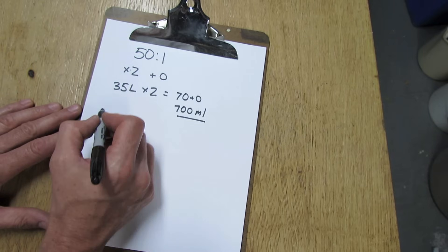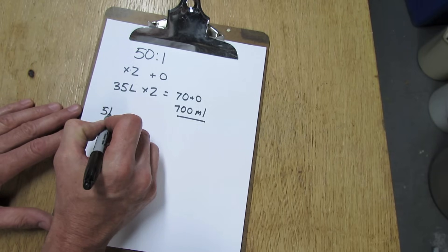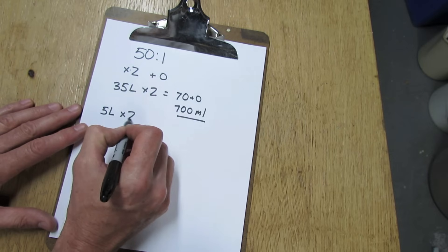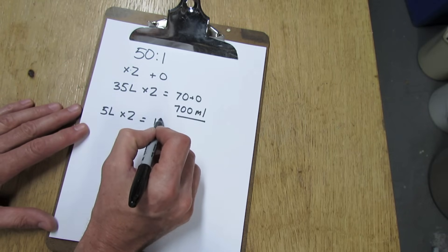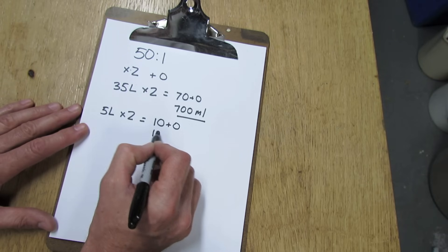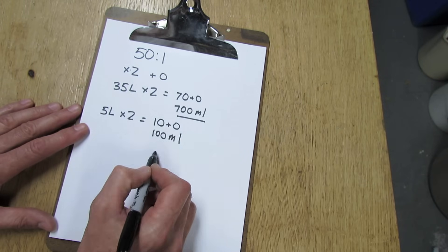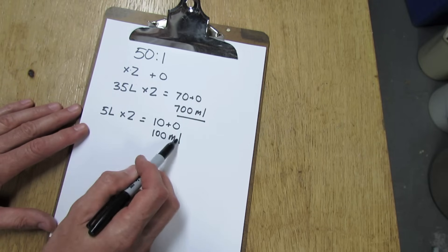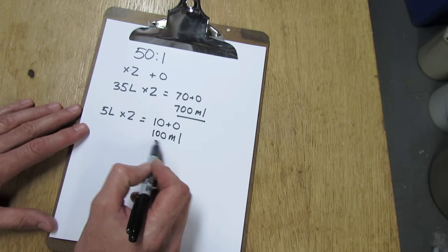So let's use another example. Let's use 5 liters as an example. So 5 liters times 2 equals 10. Add a 0, that's 100 milliliters. So that will give you a 50 to 1 ratio if you add 100 milliliters to 5 liters of fuel.